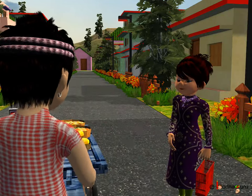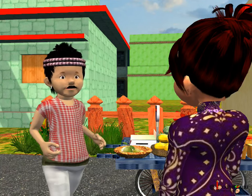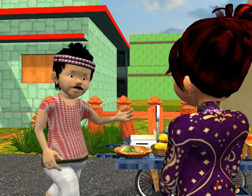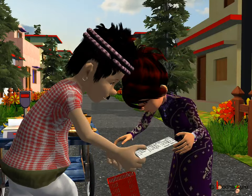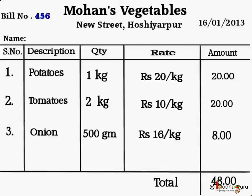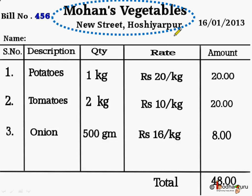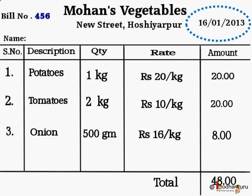Coming back to the bills, as we saw in the story, the lady customer bought 1 kg of potatoes, 2 kg of tomatoes and 500 gms of onions from Mohan. The bill was given to the lady by Mohan, as it indicates his business name — Mohan's Vegetables — located at New Street, Hoshyarpur. The date of purchase was 16th January 2013.